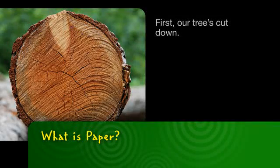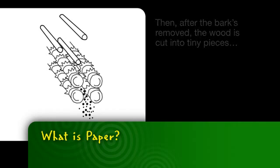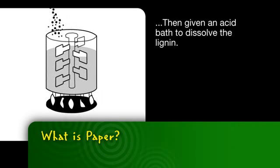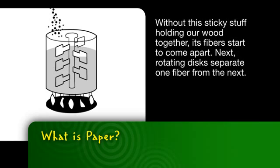First, our tree is cut down. Then, after the bark's removed, the wood is cut into tiny pieces. Then, given an acid bath to dissolve the lignin. Without this sticky stuff holding our wood together, its fibers start to come apart.